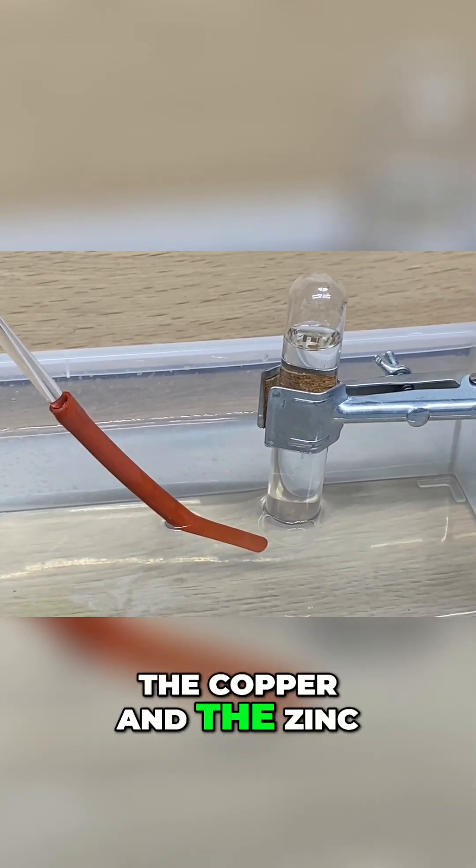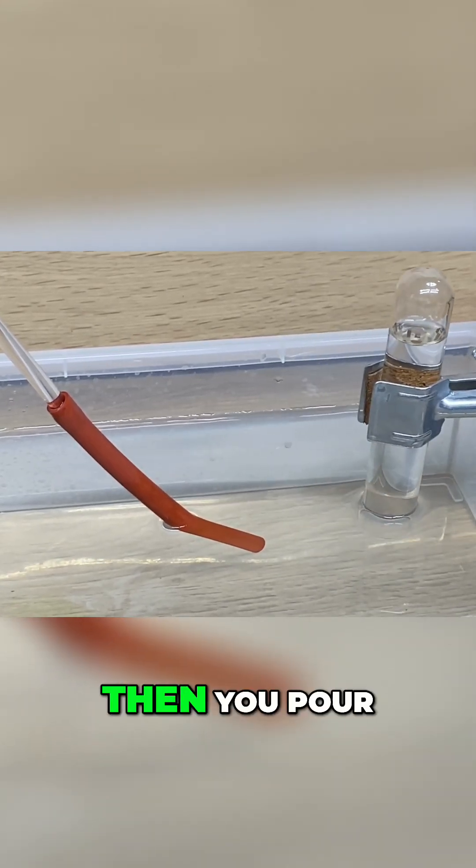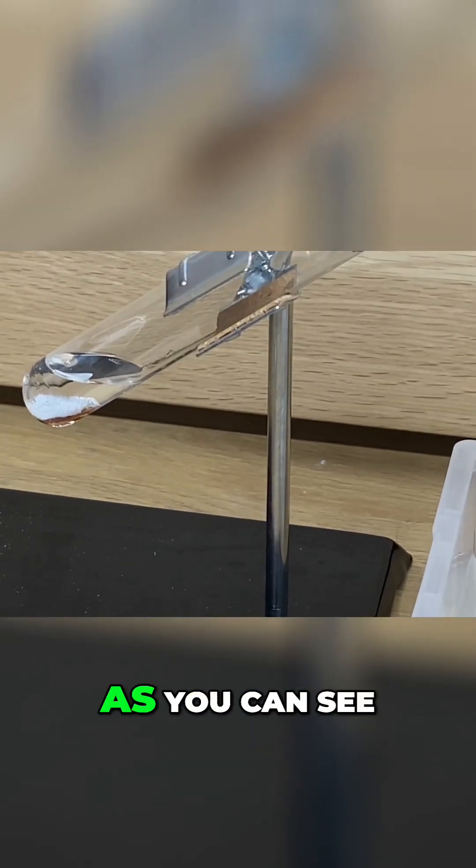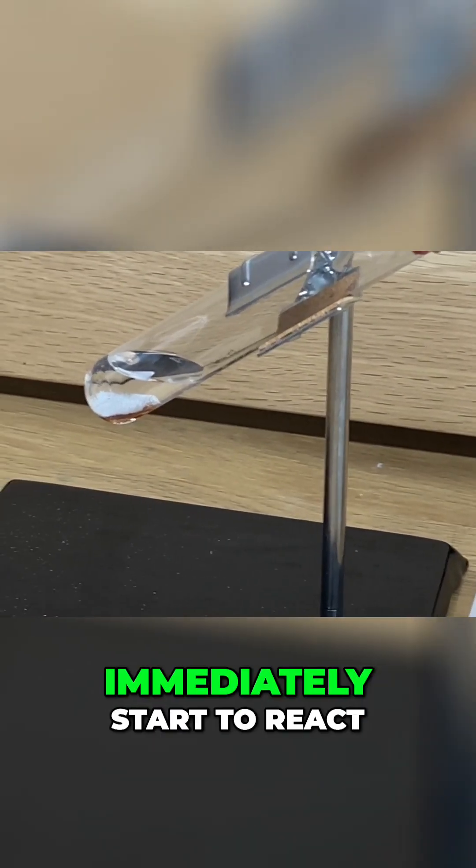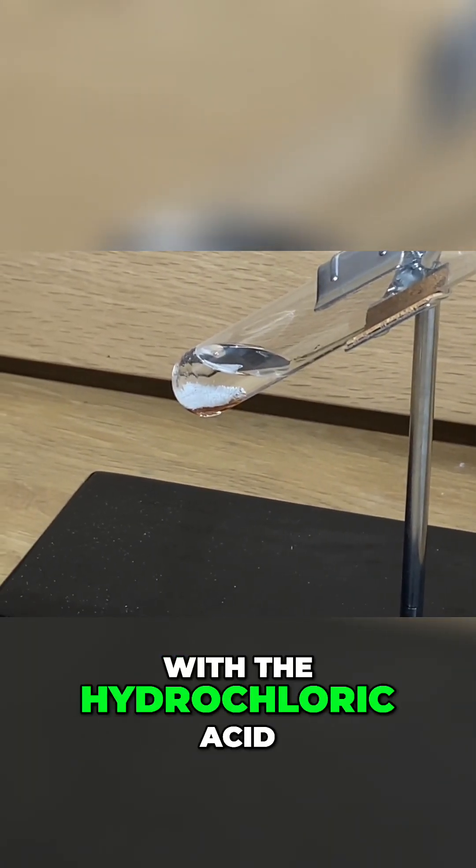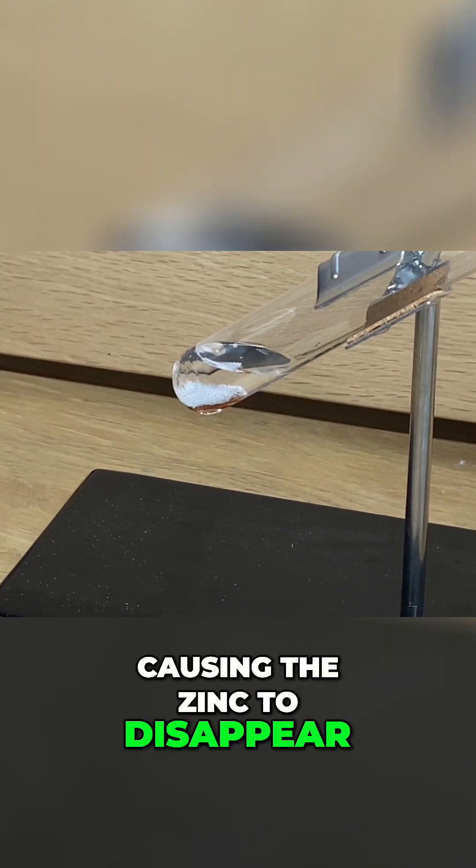First you put the copper and zinc in the test tube, then you pour in the hydrochloric acid. As you can see, the zinc will immediately start to react with the hydrochloric acid, causing the zinc to disappear.